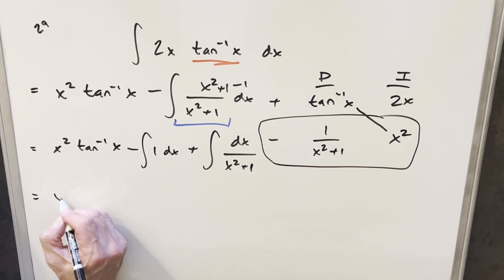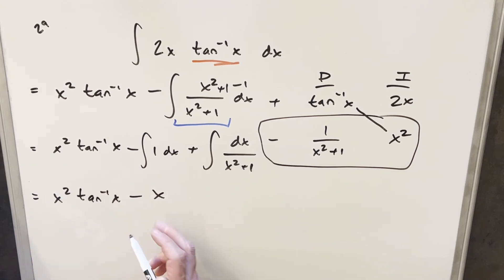Then from here, we can just integrate. So integral of 1 here is going to be minus x. Then integral of x squared plus 1 is just going to give me Arctan of x.